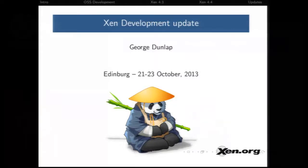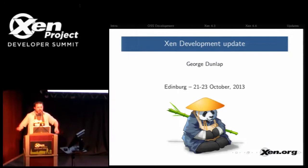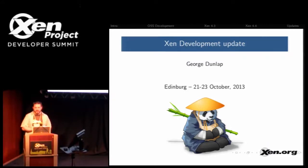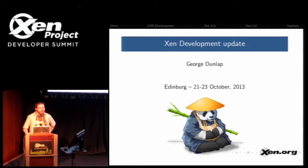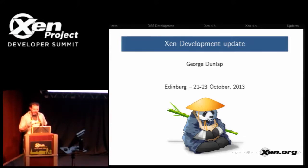My name is George Dunlap, and I work for Citrix on the open source Xen team. I've been the release coordinator for 4.3, and I've also been volunteering for that for 4.4. I'm going to be giving an update on the development and what's been going on.